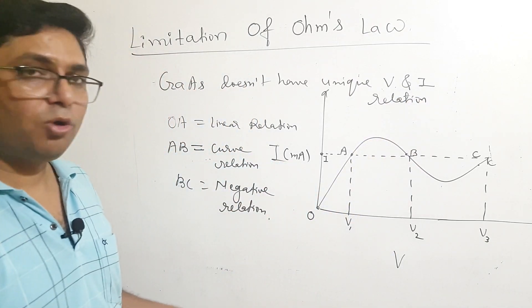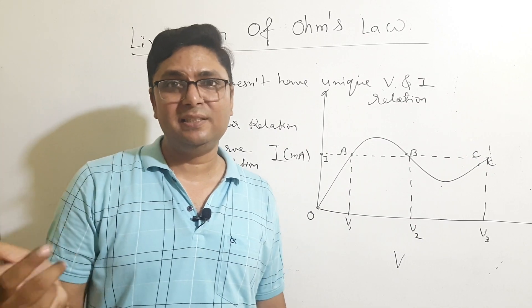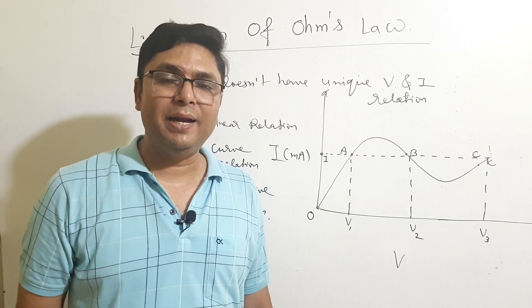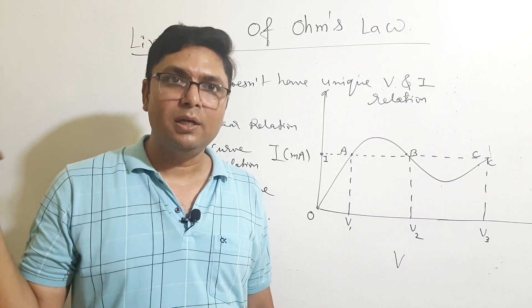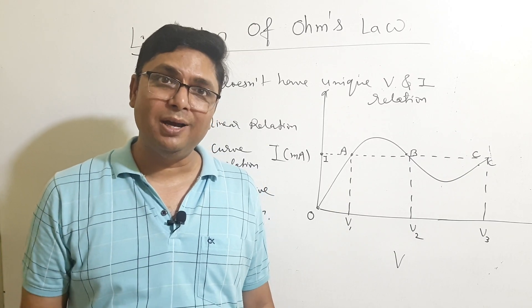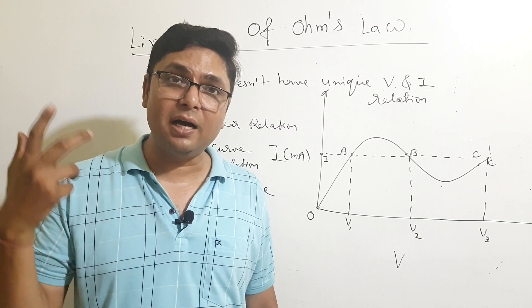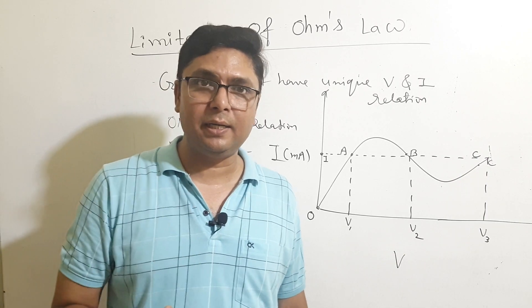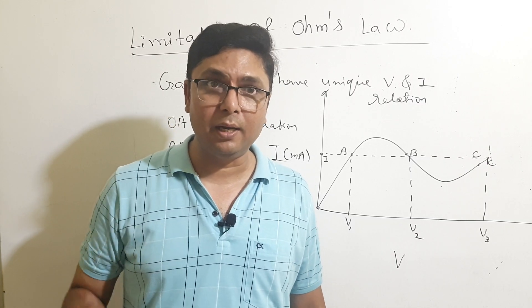To summarize the limitations of Ohm's law: first, with increase in temperature the IV graph for a metallic conductor is not a straight line — it bends at high temperature. Second, for a diode the V-I relation changes by changing the polarity. Third, gallium arsenide (GaAs) has different voltages at the same current. Such materials are said to be non-Ohmic materials. Thank you.